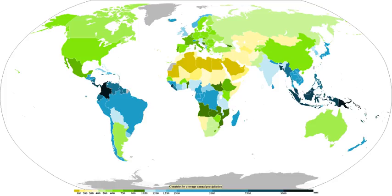Tropical cyclones, a source of very heavy rainfall, consist of large air masses several hundred miles across with low pressure at the center and with winds blowing inward towards the center in either a clockwise or counterclockwise direction. Although cyclones can take an enormous toll in lives and personal property, they may be important factors in precipitation regimes, as they may bring much-needed precipitation to otherwise dry regions. Areas in their path can receive a year's worth of rainfall from a single tropical cyclone passage.